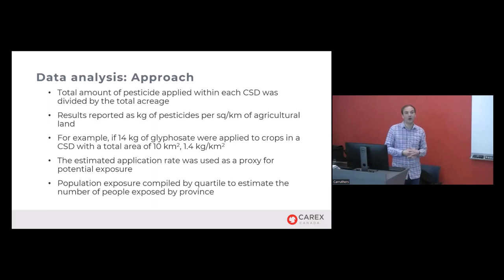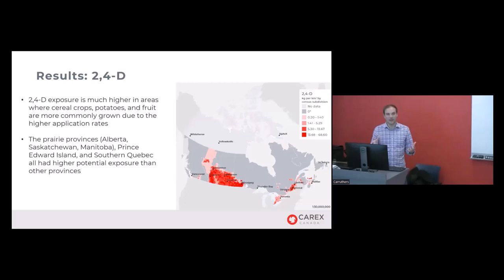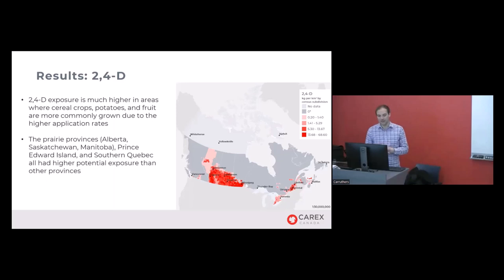We then looked at how many people live in these areas and broke results down into quartiles by province — showing whether most of the population is living in the low or high exposure category. I'll now walk through three maps, one for each pesticide. You'll notice the 2,4-D and glyphosate maps look similar since both are herbicides applied to similar crops. Chlorothalonil has a slightly different spatial pattern.